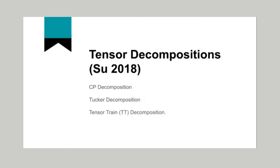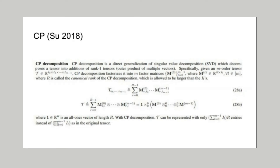From the paper by Sue 2018, the following definitions of tensor decompositions are given: CP, Tucker, and tensor train. CP decomposition is a direct generalization of singular value decomposition (SVD), which decomposes a tensor into additions of rank-1 tensors — outer products of multiple vectors. Specifically, given an M-order tensor, CP decomposition factorizes it into M factor matrices, where R is the canonical rank. CP decomposition reduces the tensor T to a set of M smaller tensors, leading to fewer floating point operations and fewer independent parameters.